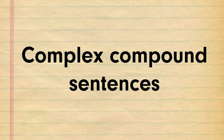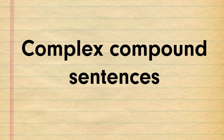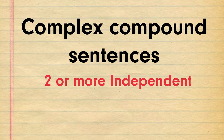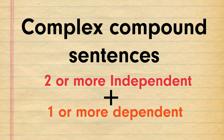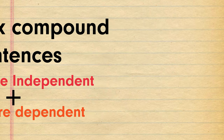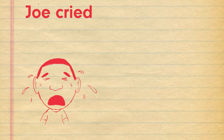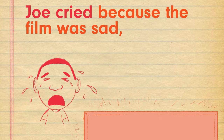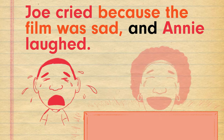The last sentence type is a complex compound sentence. These types of sentences include two or more independent clauses, as well as one or more dependent clause. As an example, this could show up as 'Joe cried because the film was sad and Annie laughed.'